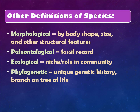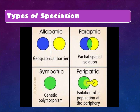Other ways we examine species include morphological (body shape, size, structure), paleontological (fossil record), ecological (niche in the community), and phylogenetic (branch of the evolutionary tree). There are four types of speciation: allopatric — a geographical barrier permanently separates two groups; sympatric — genetic polymorphism where two groups combine to form a new species; peripatric — partial spatial isolation with some overlap creating a new species; and parapatric — isolation of a small part of the community, similar to founder effect, producing a new species. AP biology focuses especially on sympatric and allopatric.